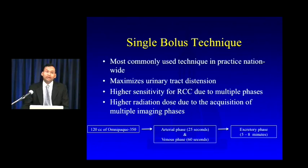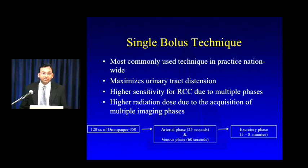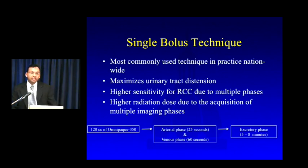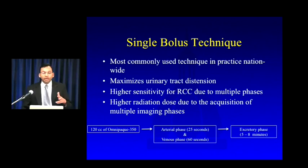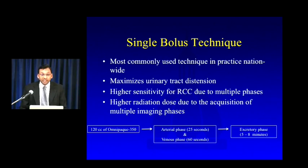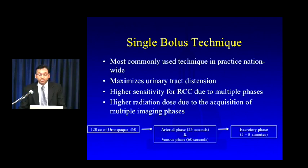When you're putting together a CT urography technique, your goal is pretty simple. Fundamentally, you're trying to maximize distention of the upper urinary tract with contrast, but do so with the least possible radiation dose. There are three primary protocol options available: single bolus technique, split bolus technique, and theoretically a triple bolus technique. The single bolus technique is by far the most commonly used across the country. You're giving 120 cc's of contrast and acquiring multiple phases, with all of that contrast contributing to excretion.